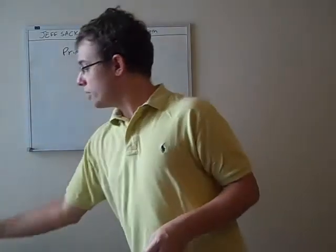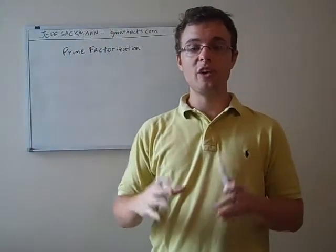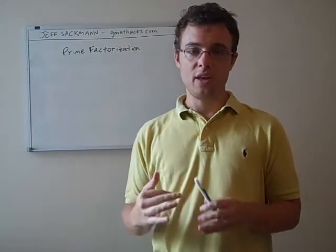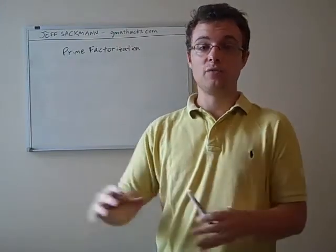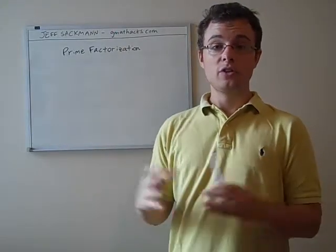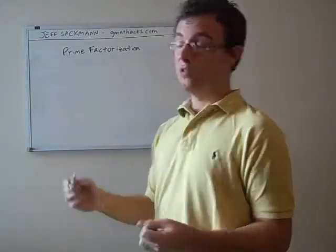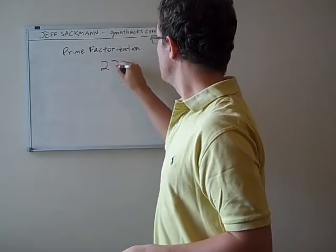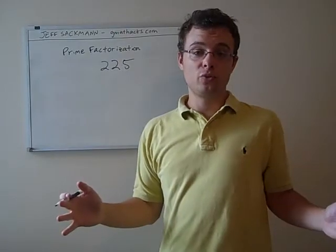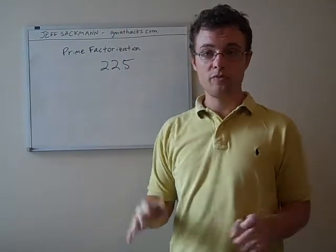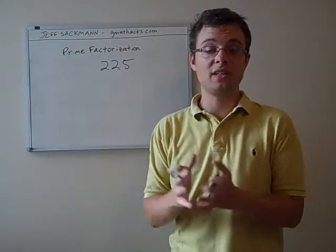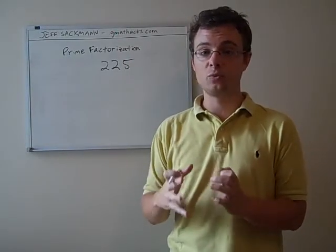What I want to show you is a method called a factor tree. That's a way of breaking down a prime factorization into individual steps that make it a lot easier to get from a big number to the smaller prime factors. Let's take an example that I've seen on the GMAT a few times: 225. You might know that 225 is 15 squared. If you don't, that's totally fine. It's a common number because it's a perfect square and has a lot of small prime factors.